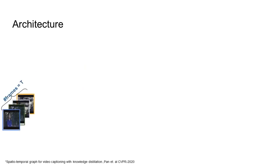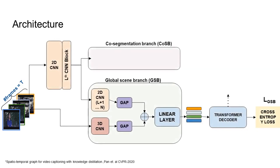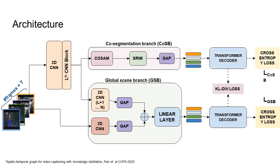Inspired by prior work, we propose a two-stream architecture where the global branch captures global features in terms of 2D and 3D CNNs, and the co-segmentation branch focuses on local salient regions by applying a co-segmentation based attention module followed by a spatial region interaction module, fed to a global average pooling layer to generate frame-level features. Both branches use transformers as a language decoder, optimized by cross-entropy loss, and knowledge is distilled from the local branch to the global branch via KL divergence.